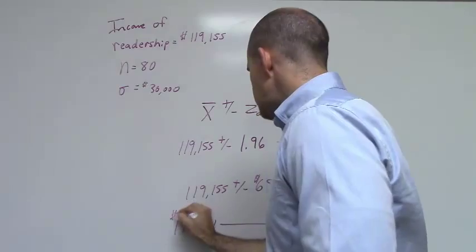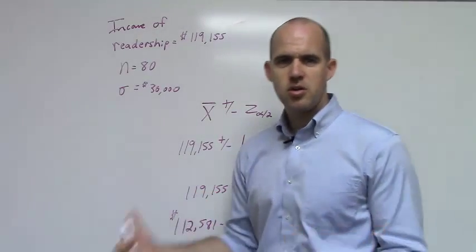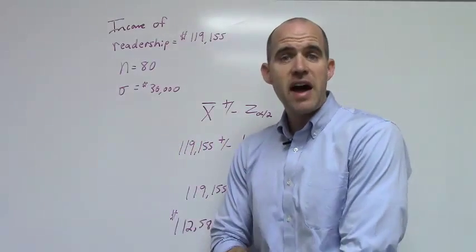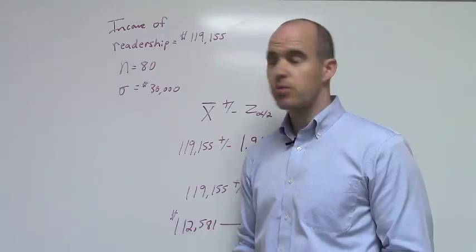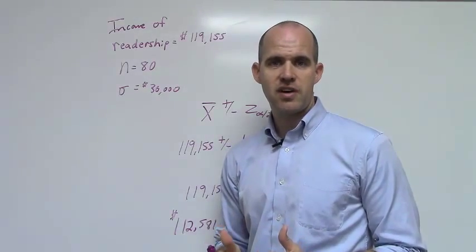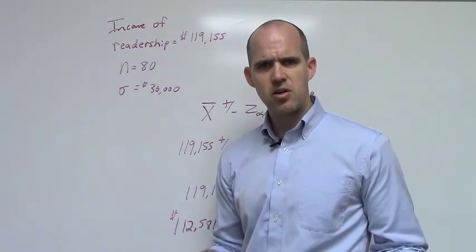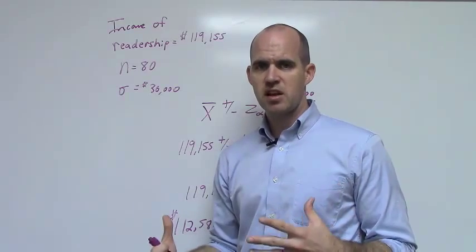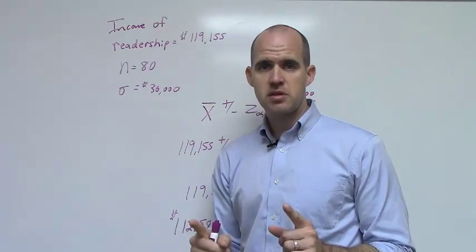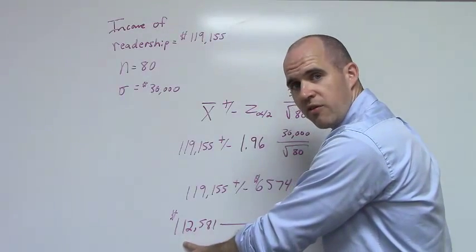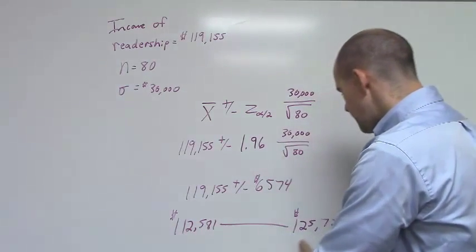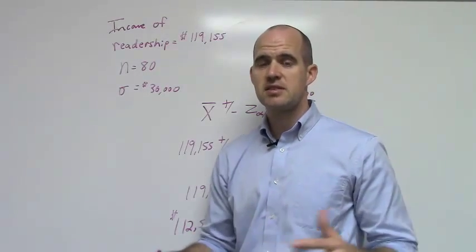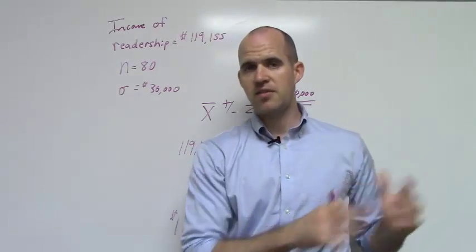So here's how to interpret this. You go to your boss and you say: I did this study of our readership and I found that our sample mean income for the readership is $119,155. Of course the boss says, is that accurate? And you say, well that's what the sample mean was. But I can be 95 percent confident that the real population mean is somewhere between $112,581 and $125,729. There's only a five percent chance that the real mean would be outside of that particular interval.